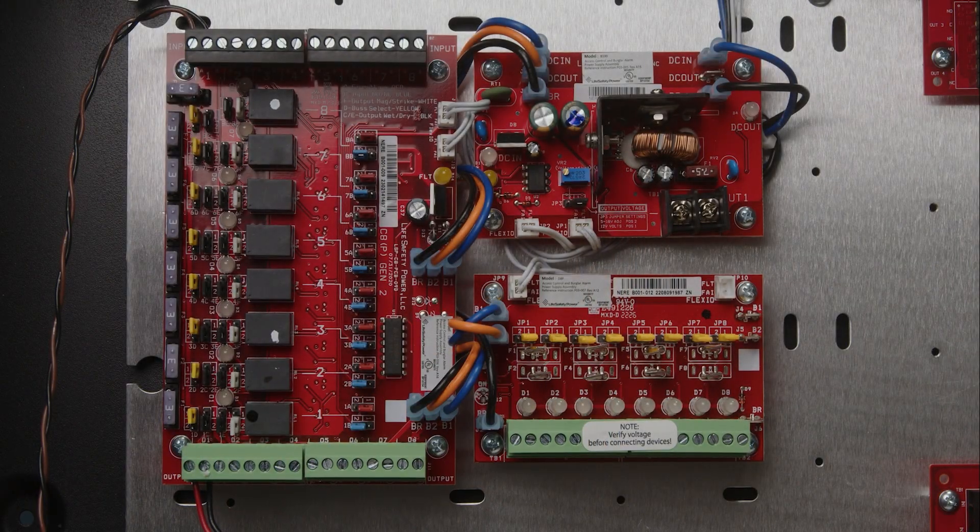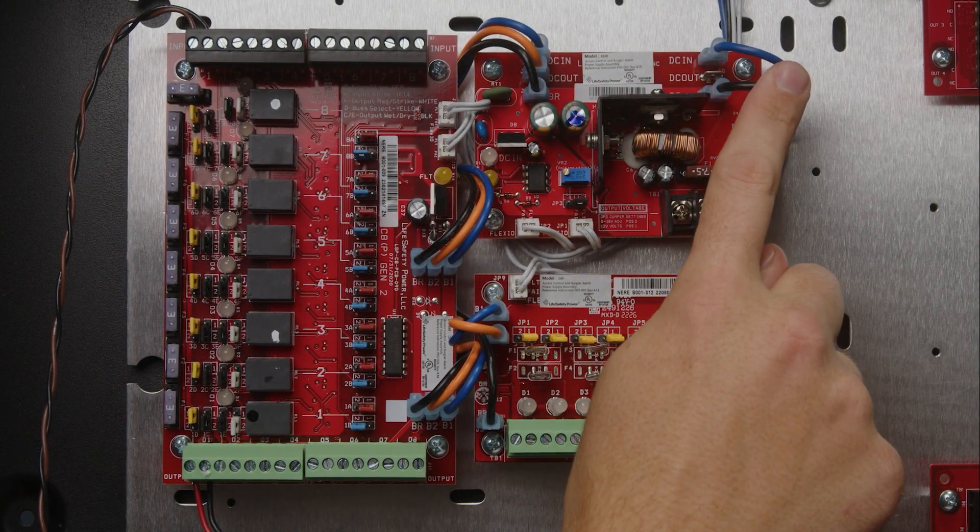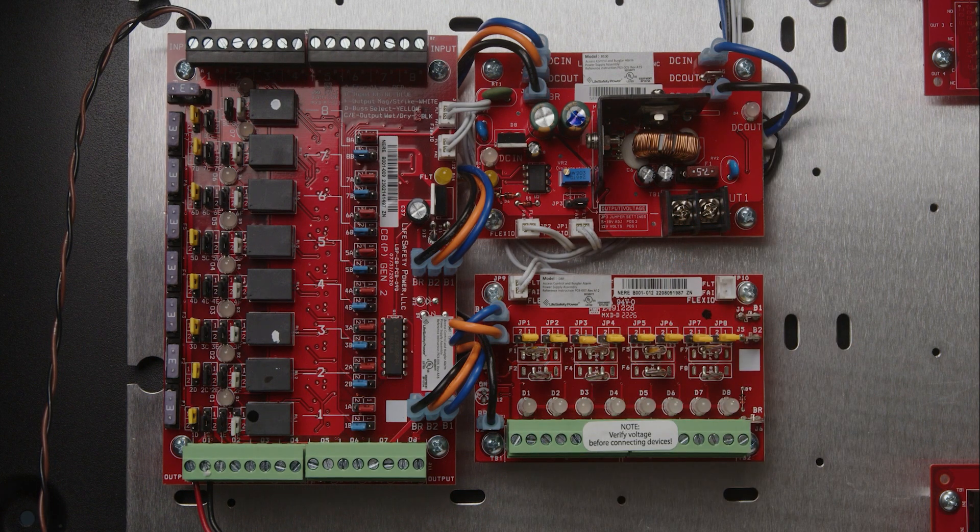Here is our B100 module. The B1-BR wiring from the right side is bringing in the 24 volts from the FPO150.